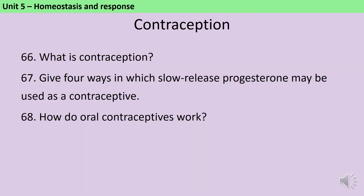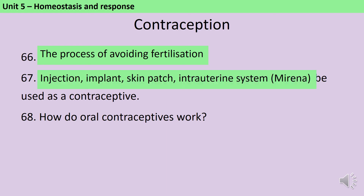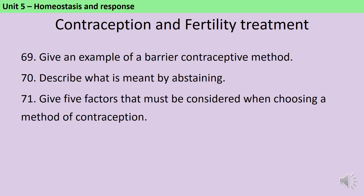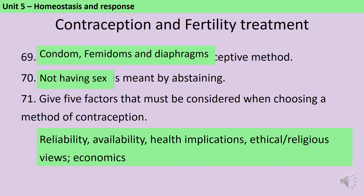Contraception is the process of avoiding fertilization. Slow-release progesterone can be used as an injection, implant, skin patch, or IUS (the Mirena coil). Oral contraceptives contain either progesterone and oestrogen together, or just progesterone — the mini pill — and these work by inhibiting FSH production so that no eggs mature. Barrier methods include condoms, femidoms and the diaphragm. Abstaining is when you don't have sex at all. When choosing a method of contraception, consider reliability, availability, health implications, ethical or religious views, and economics.